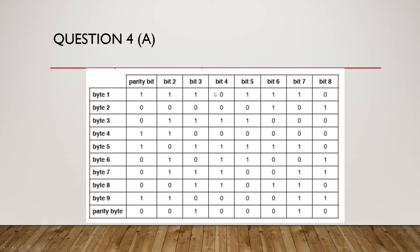Now look at which row is in error. Row 1: even — good. Row 2: even — good. Row 3: even — good. Row 4: even — good. Row 5: even — good. Row 6: even — good. Row 7: 5 ones — odd. So the fourth column and the seventh row intersect at the bit in error. That is where the circle should be drawn.